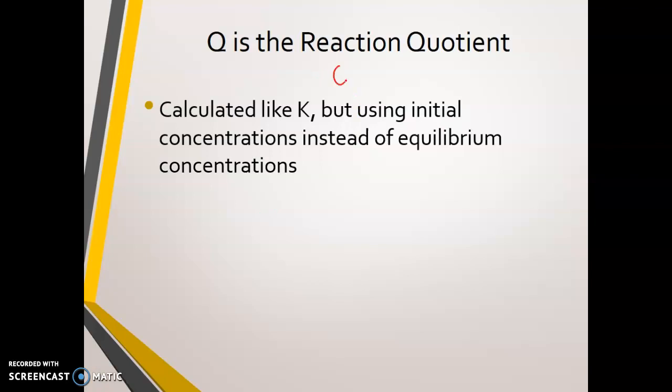So when you go to calculate Q, Q is going to be the concentration of the products initially, so like what you start the reaction with, divided by the concentration of the reactants initially. So it's just the numbers that you're plugging in are going to be different than the concentrations at equilibrium.